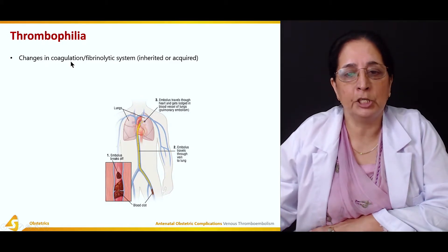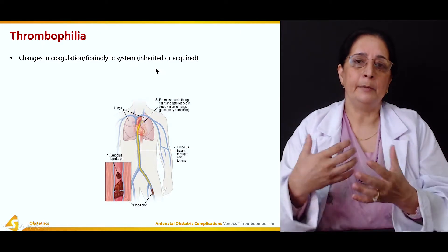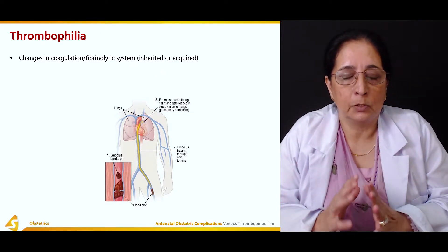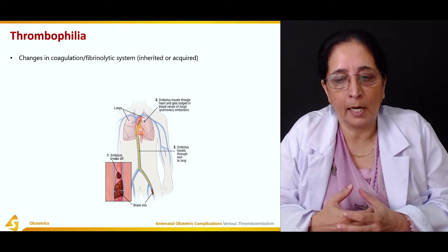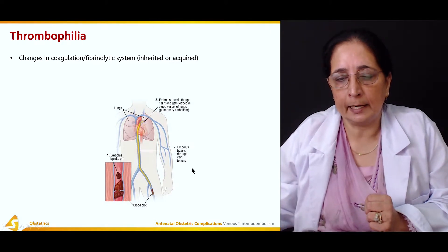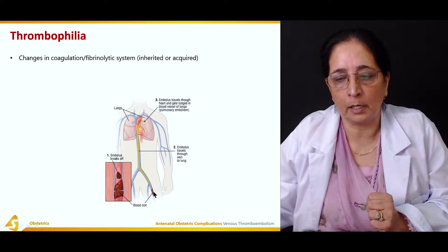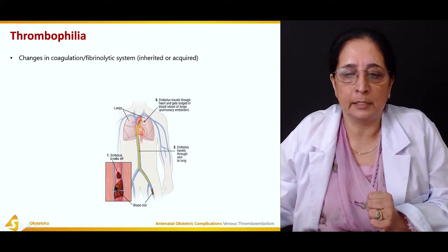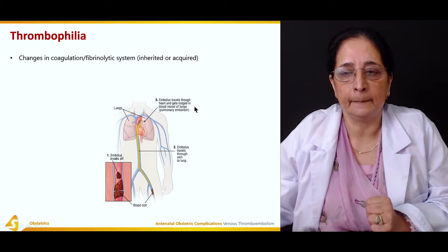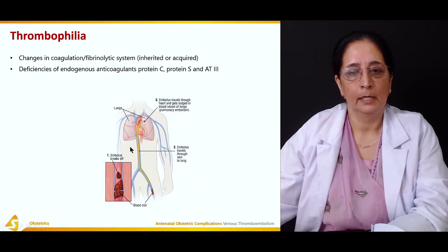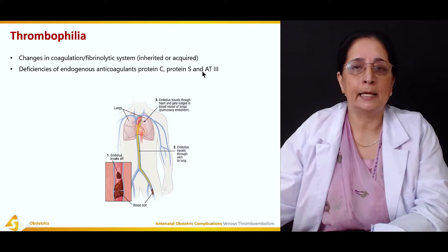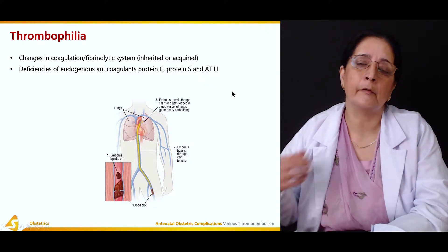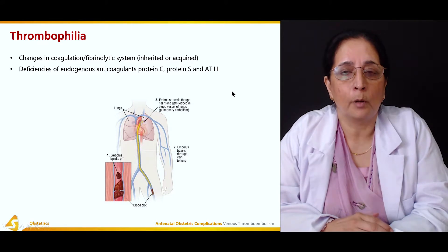Changes in the coagulation and fibrinolytic systems can be acquired or inherited. Thrombophilia is the condition of increased blood clot formation. As seen in this diagram, the blood clot can dislodge and cause an embolus in the lungs. Deficiencies of endogenous anticoagulants — protein C, protein S, and antithrombin factor 3 — are responsible for thrombophilia.